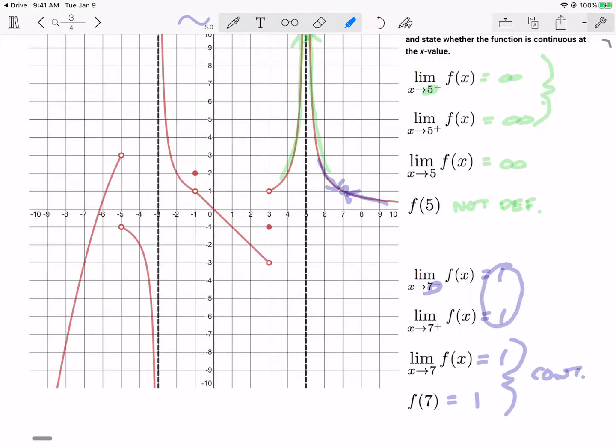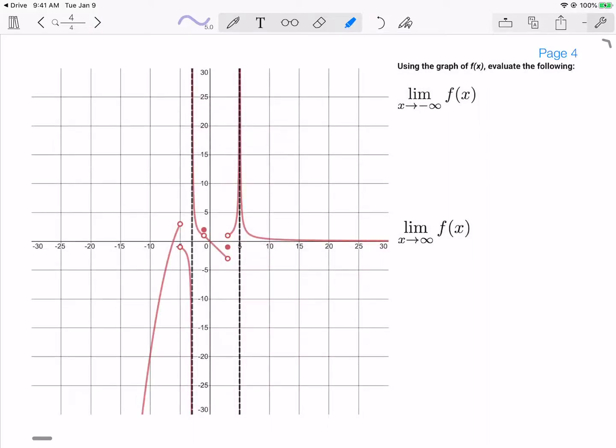Remember that these two have to be equal in order for this one to exist, and then the limit has to equal the function's value. So the last thing we're going to look at is limits as we go to infinity. Same graph, just zoomed out a bit.